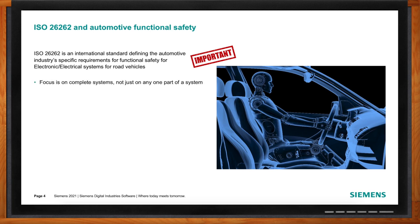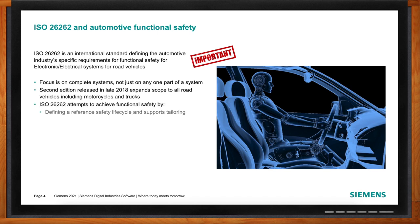From there, you create safety requirements and make sure they're carried forward through your entire design and development process. What 26262 is doing is focusing on the system — not any one part of it. It attempts to achieve functional safety by defining the complete safety life cycle from the identification of the faults to the verification of the entire device and every step in between. You don't have to do every single thing it asks, but you must justify any changes you make — that's called tailoring.